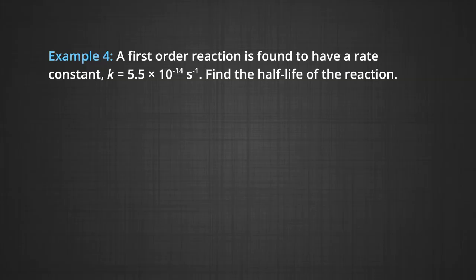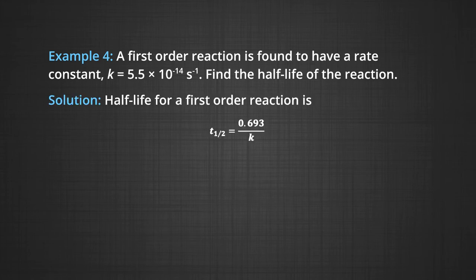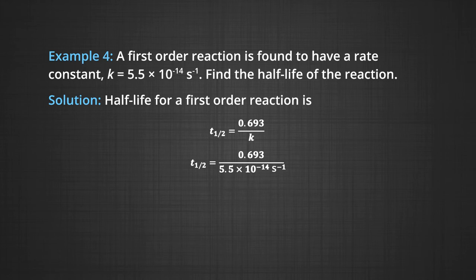Example: A first order reaction has a rate constant K = 5.5 × 10⁻¹⁴ per second. Find the half life. T½ = 0.693/K = 0.693/(5.5 × 10⁻¹⁴) = 1.26 × 10¹³ seconds.